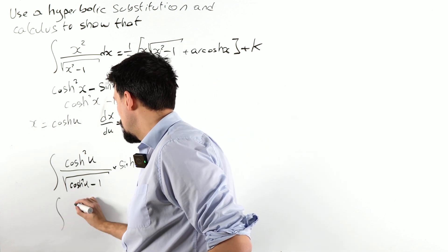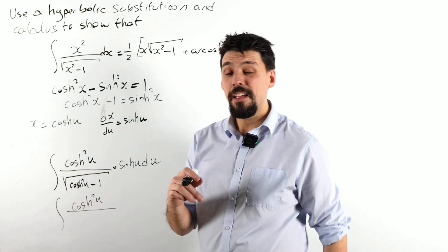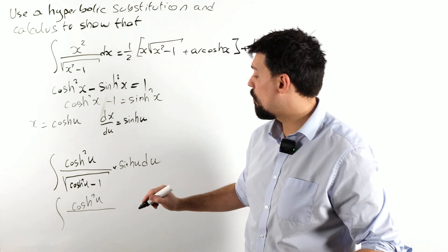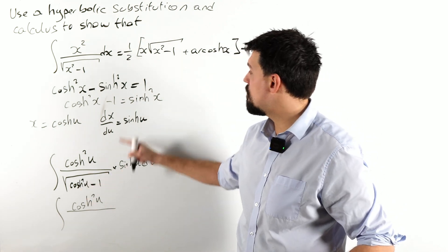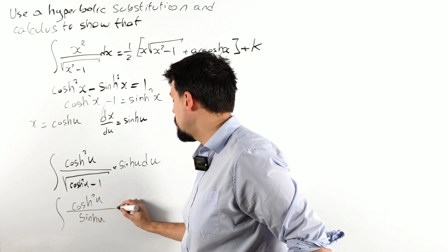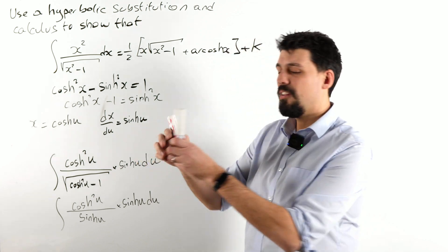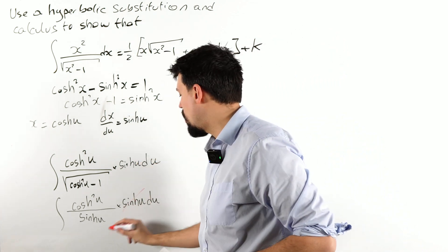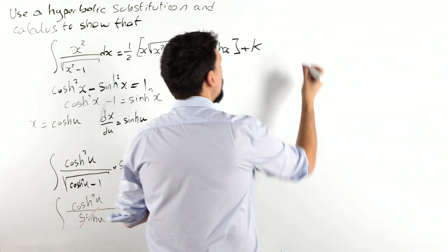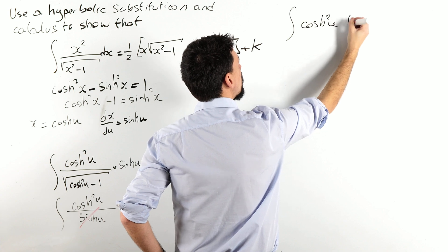What do we get? We get the integral of cosh²(u) over the square root of cosh²(u) minus one, and dx becomes sinh(u) du. Now the whole point of this is that cosh²(u) minus one is sinh²(u), so square rooted gives sinh(u), which cancels. We are left with the integral of cosh²(u) du.